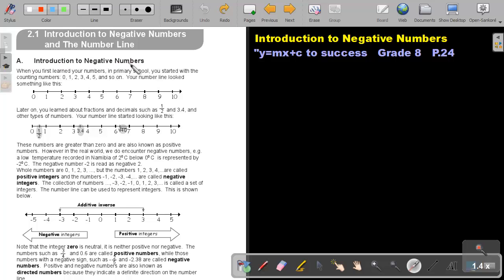Introduction to Negative Numbers. When you first learned your numbers in primary school, you started with the counting numbers 0, 1, 2, 3, 4, 5, and so on. Your numbered line looked something like this.